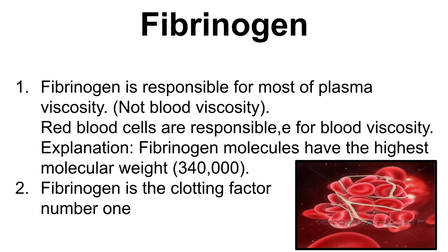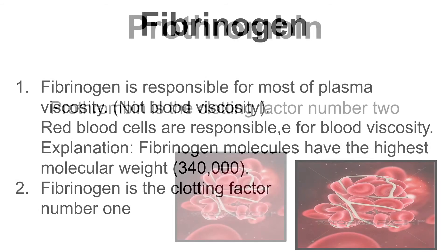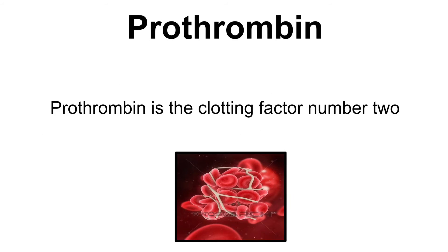Next, we have fibrinogen. Fibrinogen is responsible for most of plasma viscosity, not blood viscosity — red blood cells are responsible for blood viscosity. Fibrinogen molecules have the highest molecular weight at 340,000. Fibrinogen is clotting factor number one. And finally, prothrombin is clotting factor number two.